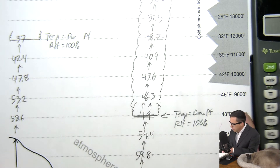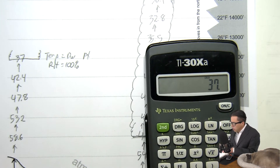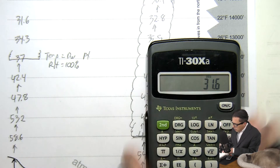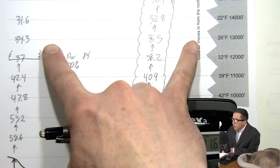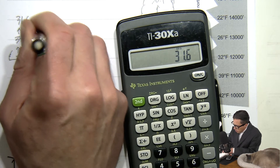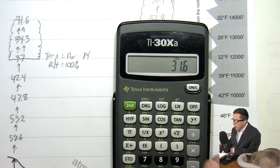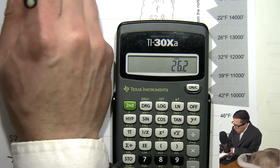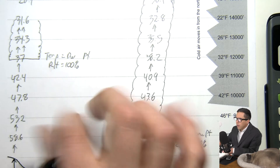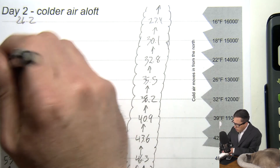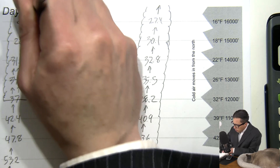From this point forward I subtract 2.7. So 37 minus 2.7 = 34.3, minus 2.7 = 31.6 — warmer, warmer, warmer, so the cloud is growing. Then 28.9, 26.2 — as we go up, the temperatures continue to stay warmer than the surrounding air. So just like the other cloud, this one also grows off the page.